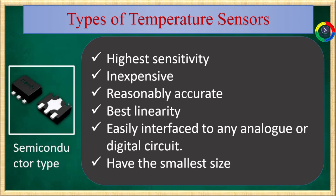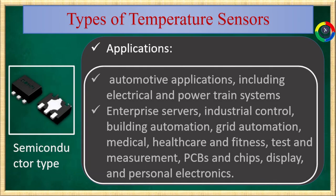The last type of temperature sensor, semiconductor type temperature sensors. The most commonly used type of sensor in electronic systems is characterized by their high sensitivity, accuracy, best linearity, and their smaller size. They can be easily interfaced to any analog or digital circuit. They are mostly applied in automotive applications like electrical and power train systems, industrial control, building automation, grid automation, healthcare systems, PCBs, and chips.